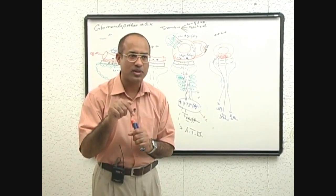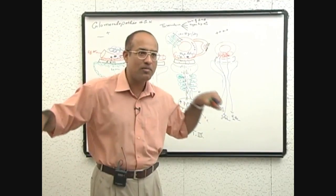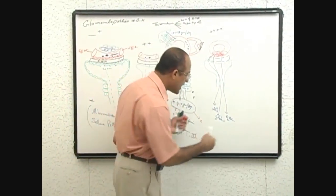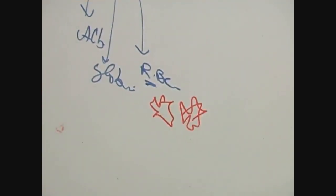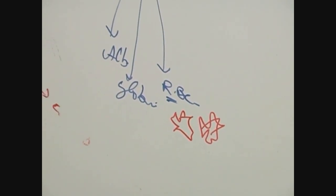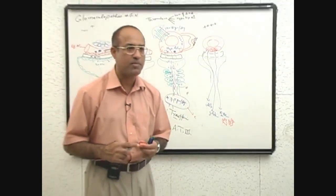So RBCs in urine which have been pushed through squeezing are dysmorphic RBCs. The morphology is disturbed. So you find RBCs which are like this. They are coming from where? All the way from glomeruli and they squeeze their way through very disrupted membrane.